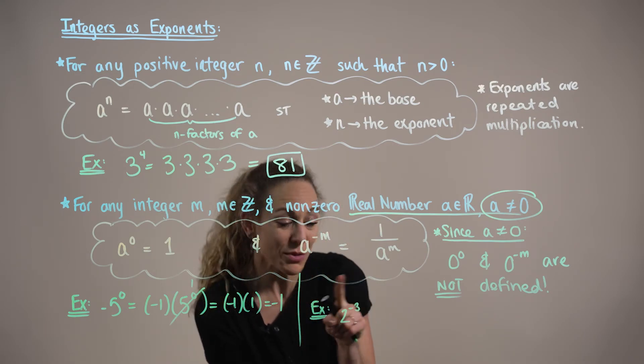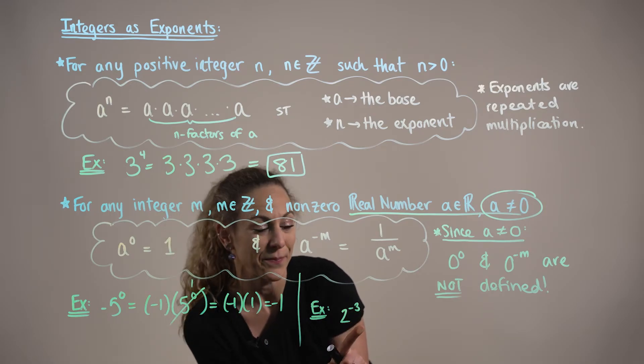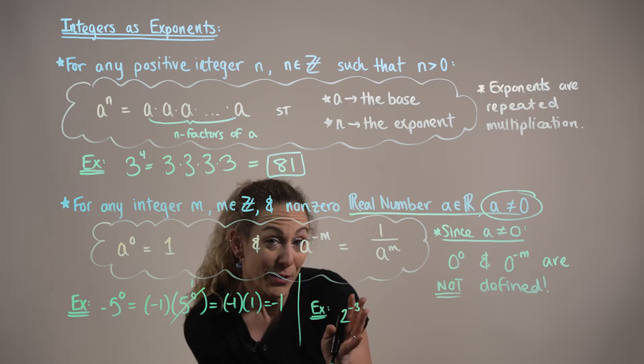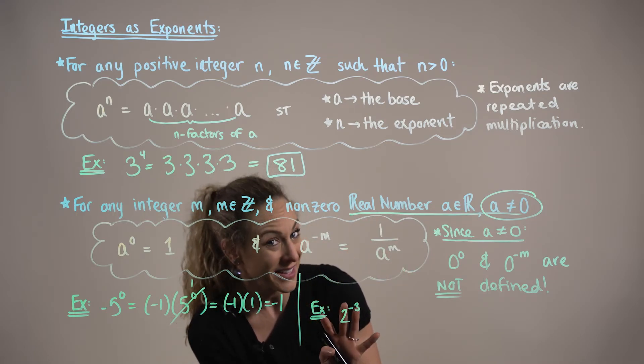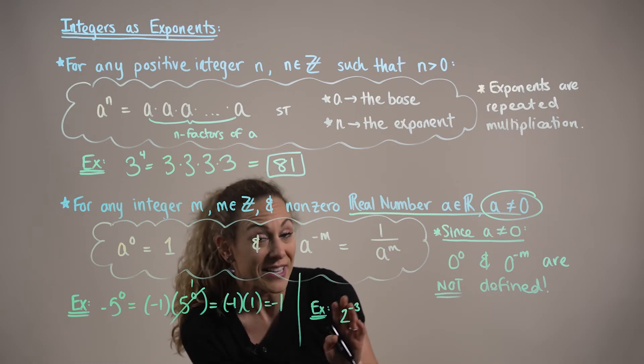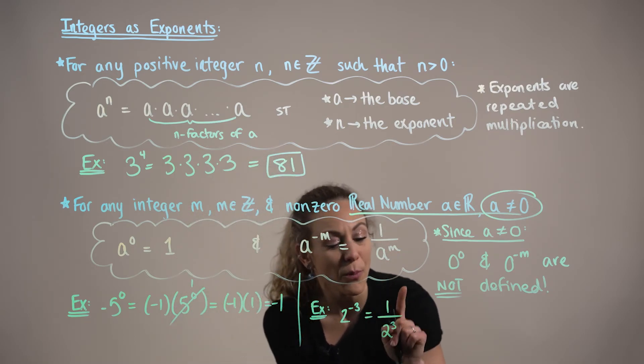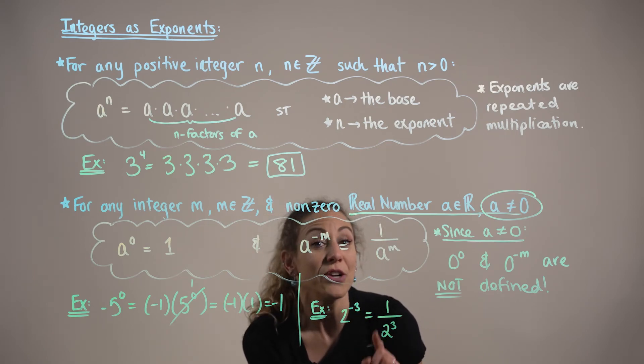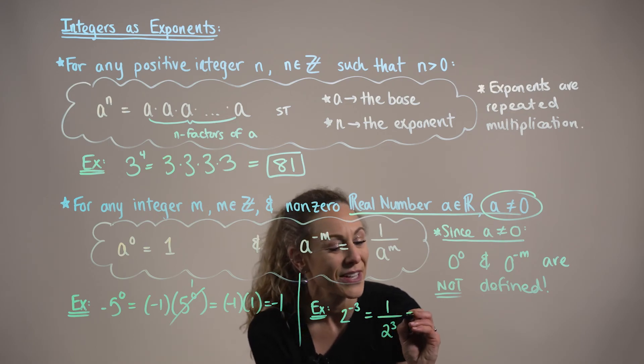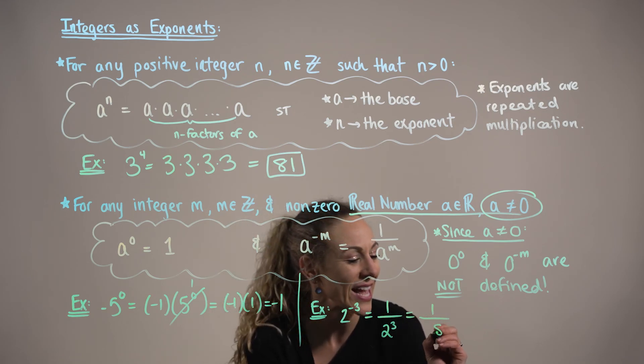In our next example, suppose that we are given the expression two raised to the negative three. We can't simplify with negative exponents, so we want to apply our second property to rewrite this so we have a positive exponent, and then simplify. Rewriting this as one by two cubed, we know two cubed means we're multiplying two together three times. This is going to leave us with one over two times two times two, or eight.